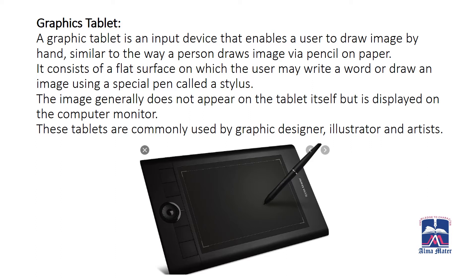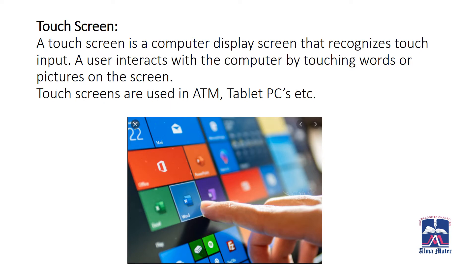The image generally does not appear on the tablet itself but is displayed on the computer display screen. The touchscreen is a computer display screen that recognizes touch input. Basically, a touchscreen takes your touch as an input. A user interacts with the computer by touching words or pictures on the screen. Some examples of touchscreens are ATM machines and tablet PCs.